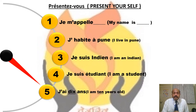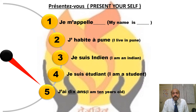And then the last one — you present your age: J'ai ans — you fill in the number appropriate to your age. Those numbers we will learn in the next slide. So once again: Je m'appelle, followed by your name. J'habite à Pune. Je suis Indien. Je suis étudiant. J'ai ans. That is the basic self-introduction.